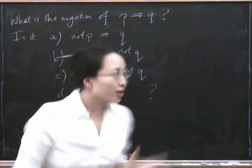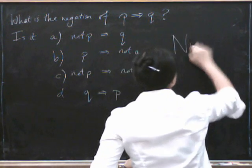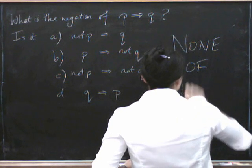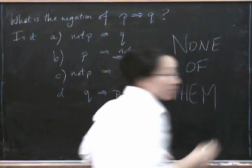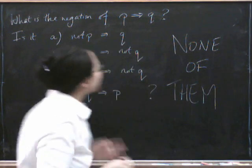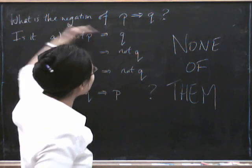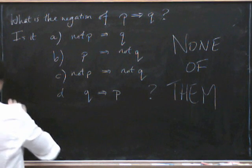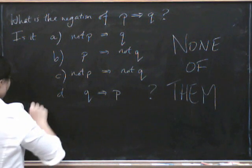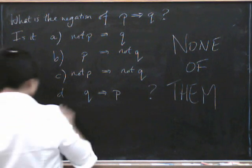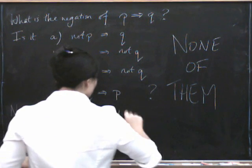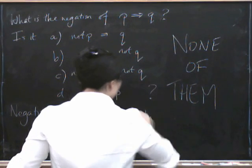It's NONE of them! You simply can't state the negation of P implies Q in any of these very neat looking ways. You can't do it. The negation is simply P does not imply Q.